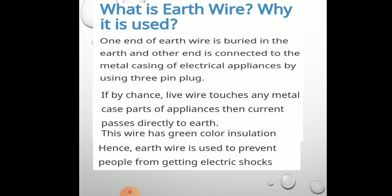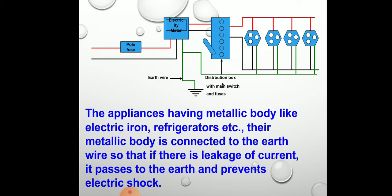If by chance the live wire touches any metal case part of the appliances, the current which passes into that metal case is directly conducted to the earth, which protects us from danger. This wire has green colour insulation. Hence, the earth wire is used to prevent people from getting electric shock — when the metal case comes in direct contact with the live wire, the current flowing in that metal case passes directly to the earth.